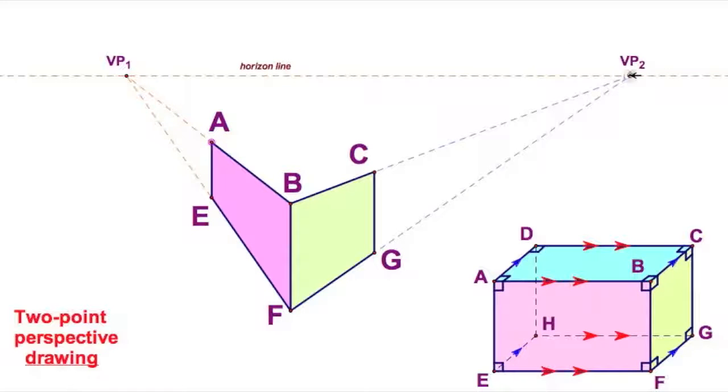A is going to connect, go across to vanishing point 2. C is going to go across to vanishing point 1. So it's going to look like this, and like this. And what do you get but an intersection right there?